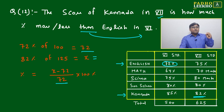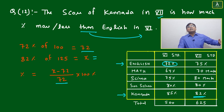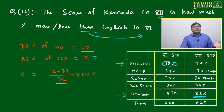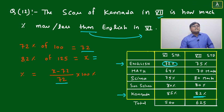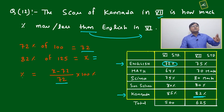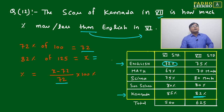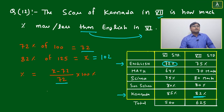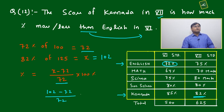If it were 100, it would simply be 82. But since it is 125, it has increased by 25 — that is, 125 percent of 82, or one-fourth of 82 added to 82. One-fourth of 82 is around 20 or 21. Adding 20 gives us approximately 102.